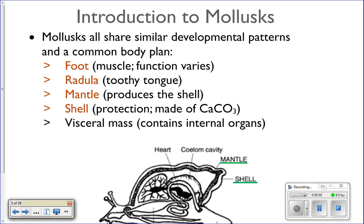So, how do these wide variety of animals all end up in the same phylum? Because you've got squid, which are very different from a snail. How did they all get in the phylum? Well, they've got some features that they all share, which groups them all into the phylum.